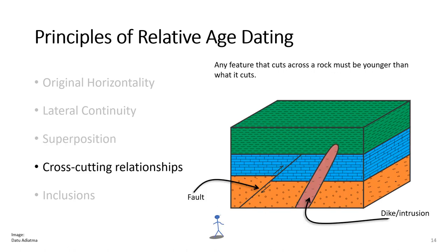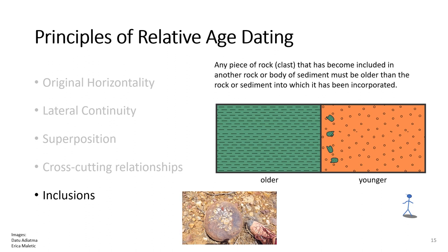Cross-cutting relationships assume that any feature that cuts across a rock layer must be younger than what it cuts. If you ripped a piece of paper, the paper would have had to have been there first in order for you to be able to rip it. Lastly, we have the principle of inclusions, which states that any piece of rock included in another rock must be older than the rock into which it was included. Remember conglomerates from last week's rock lab? The pebbles in that conglomerate had to have existed in order for them to be included in the rock.